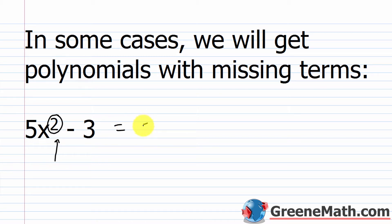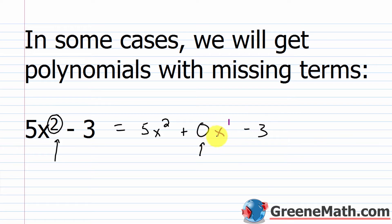So we have a little trick for that. We rewrite this as 5x squared plus 0x to the first power, and then minus 3. Remember, 0 times anything is 0. So legally, I can do that — these two things are the same. I haven't changed the value; we just made it look a little bit different. Remember that 0 is used in our number system as a placeholder, and it's no different here — it's just being used as a placeholder.